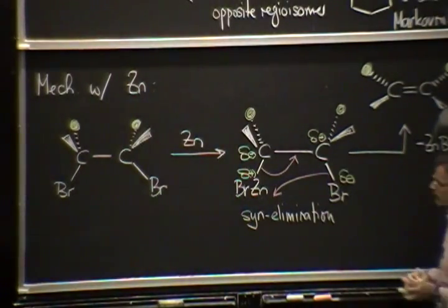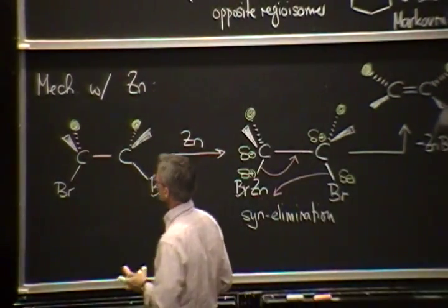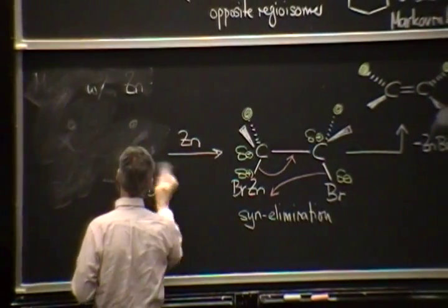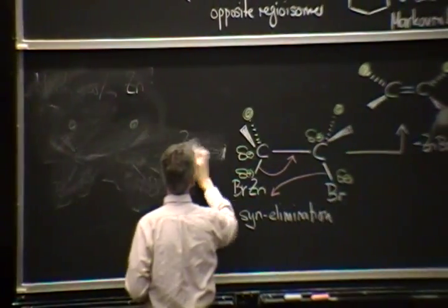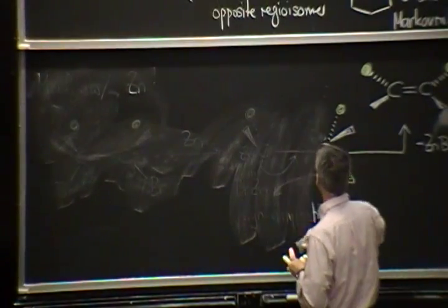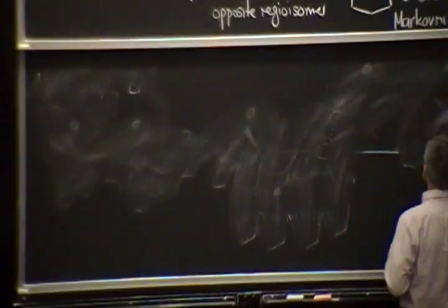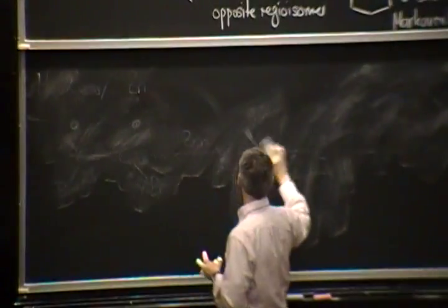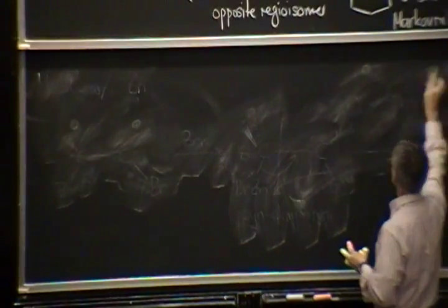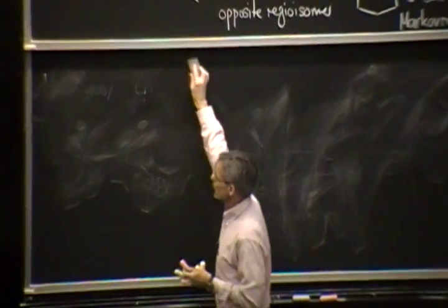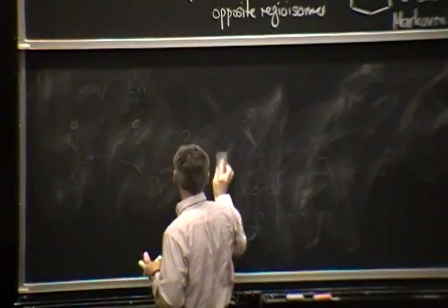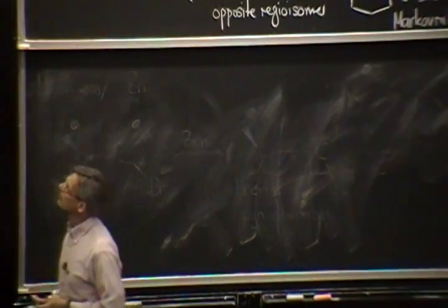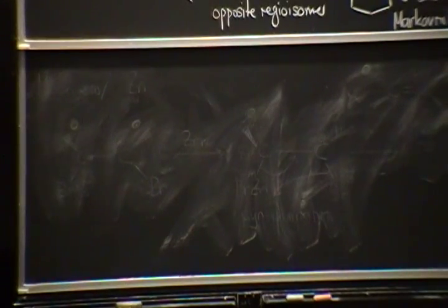And this is also known as the anti-Markovnikov product. So, this secondary chloride would be the anti-Markovnikov product. And it's, in this case, only a very minor side product in the addition of HCl. Any questions for this HCl addition? It's an ionic mechanism, right? It's an acid-base type mechanism. And it follows Markovnikov's rule by adding the hydrogen to the less substituted carbon because of the stability of the carbocation. So, any questions?